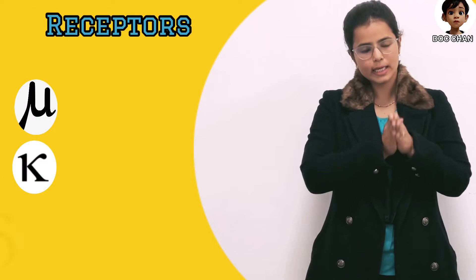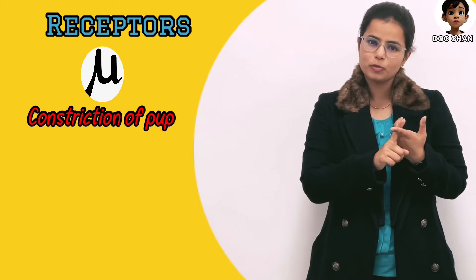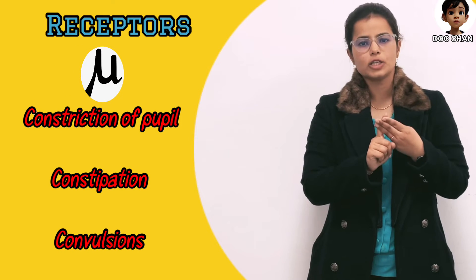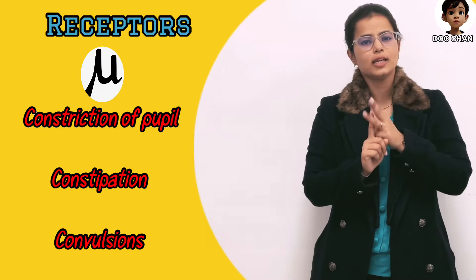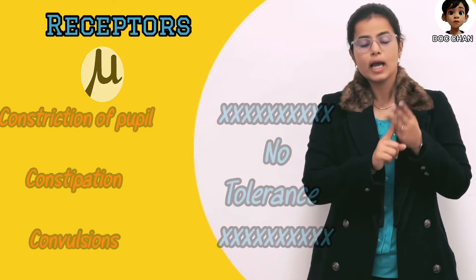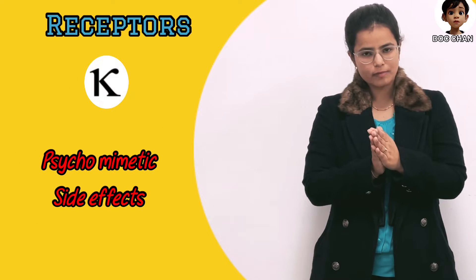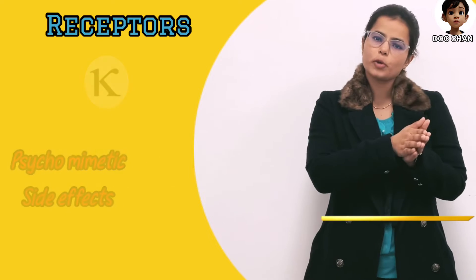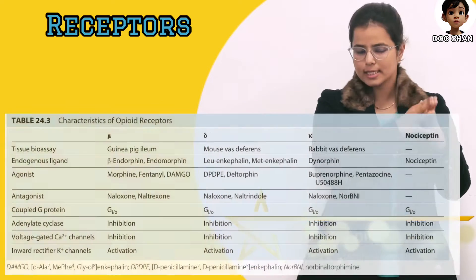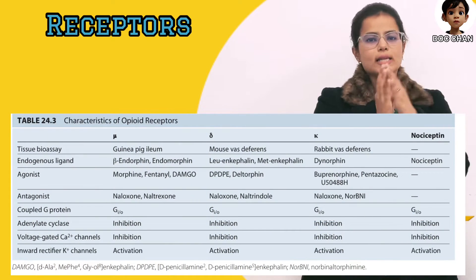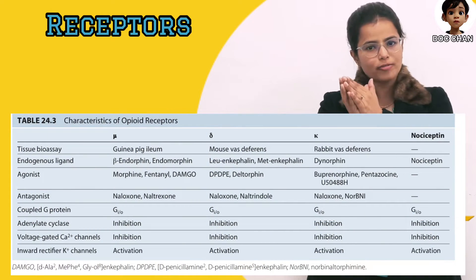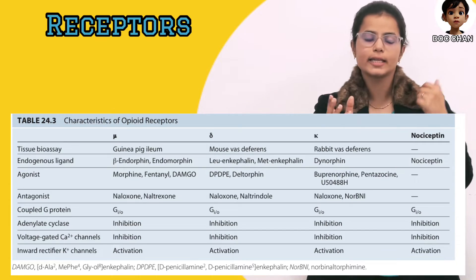Coming to receptors: mu, kappa, and delta. All the receptors contribute to analgesia, while mu has the specific actions of constriction of pupils, constipation, and convulsions. These three effects will never develop tolerance, and kappa has psychomimetic side effects. The endogenous opioids acting at these receptors are: mu has endorphin, kappa has enkephalin, and delta has dynorphin.